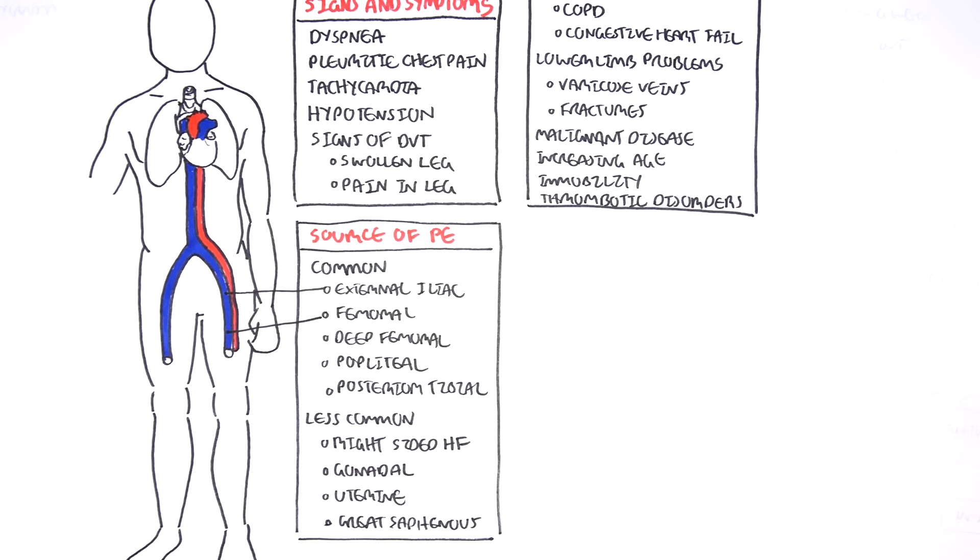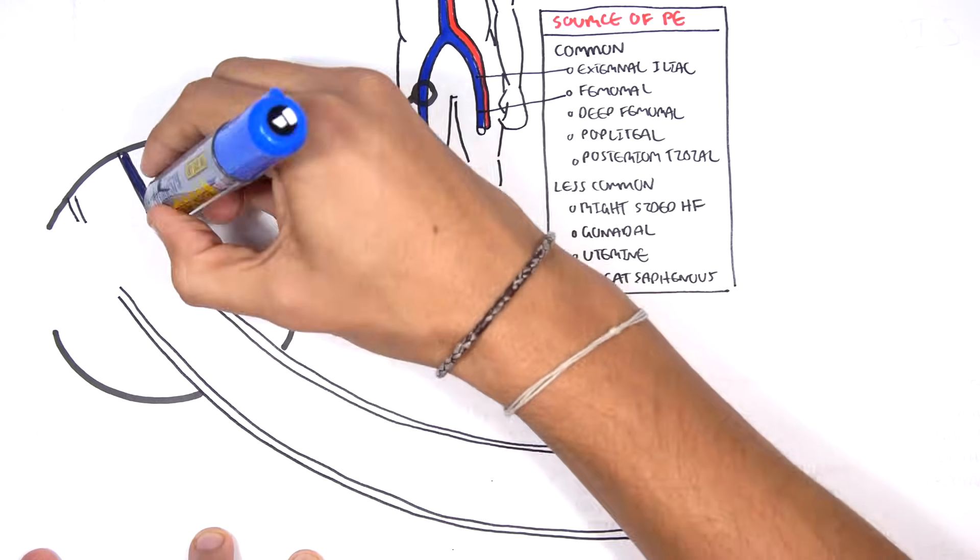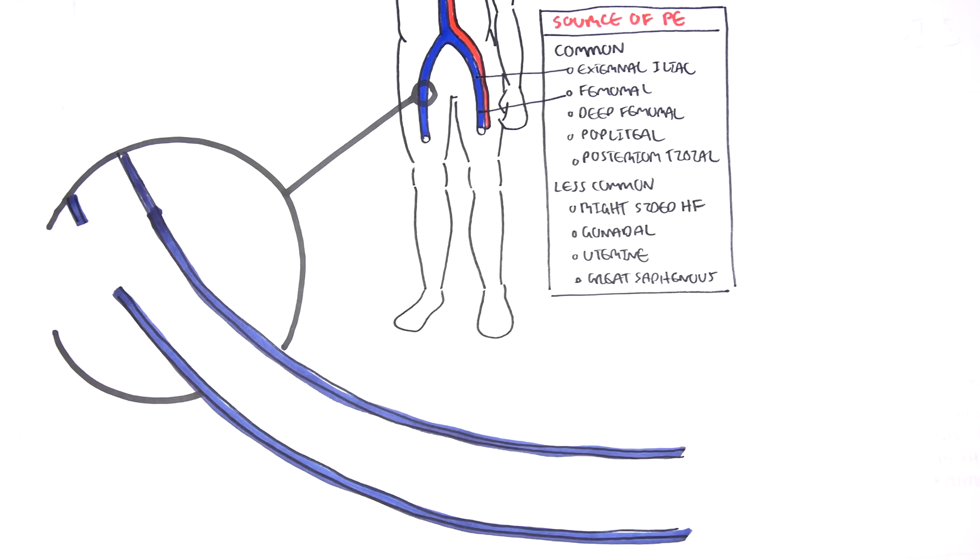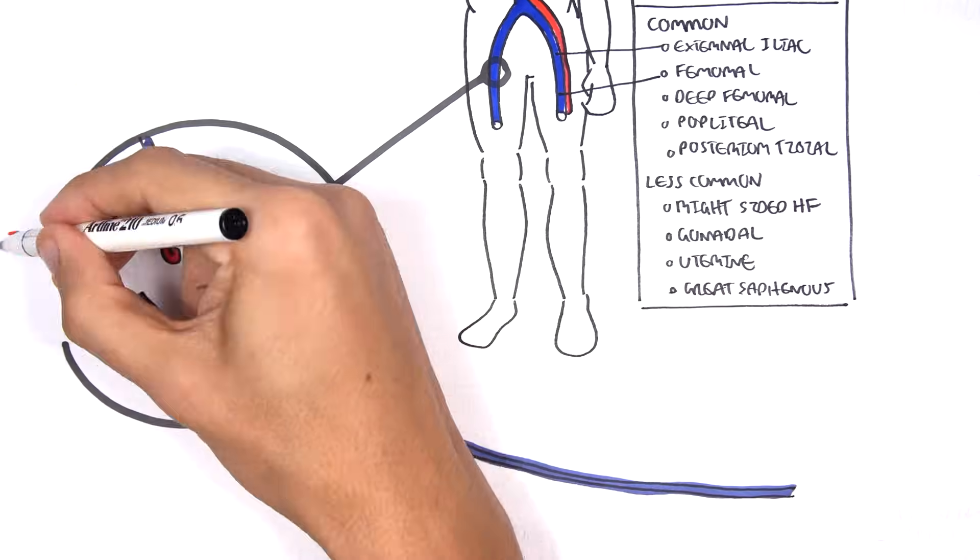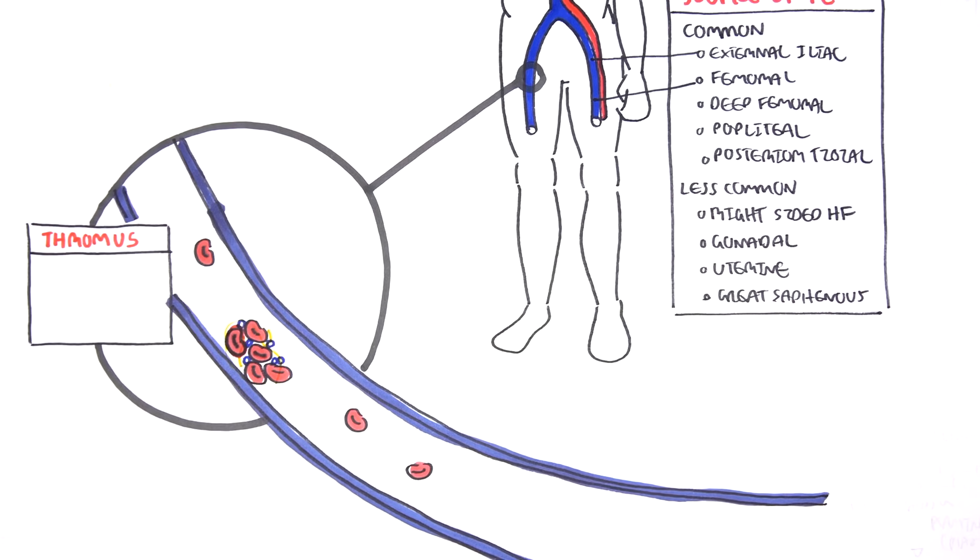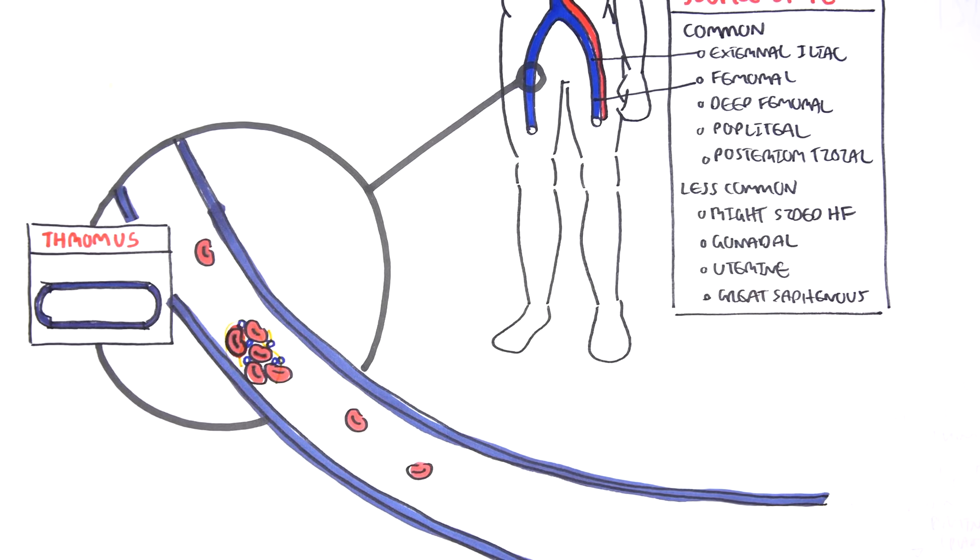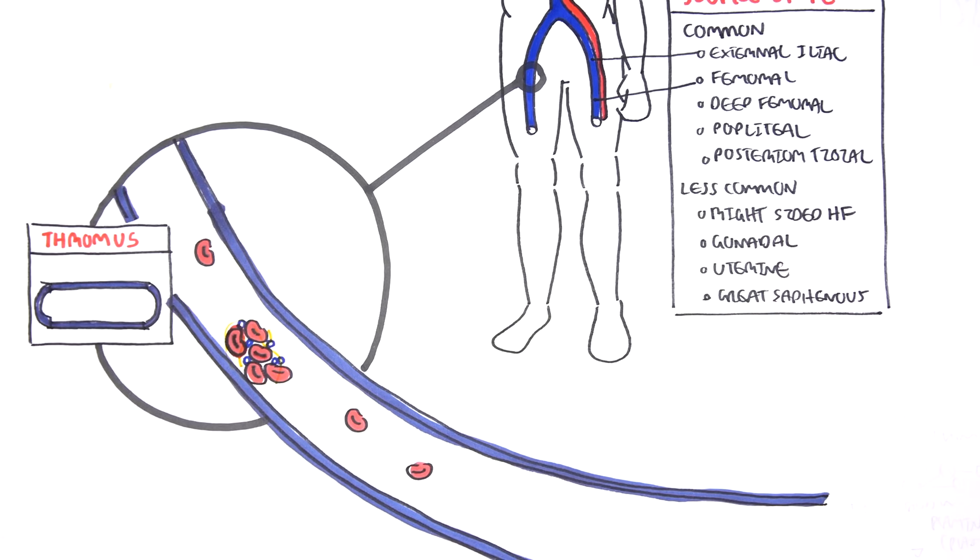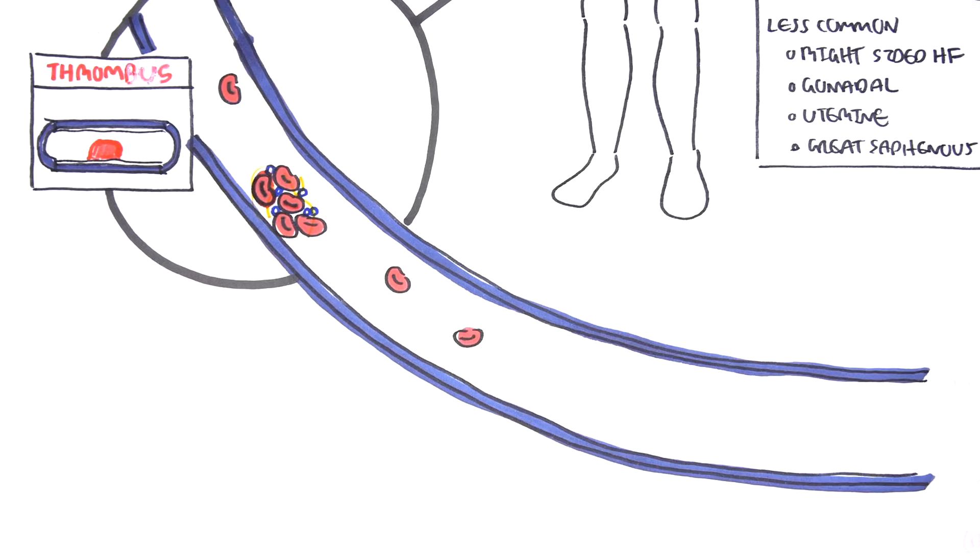So what is a thrombus? Let's zoom into the external iliac vein. Here I'm drawing the external iliac vein, and a thrombus is essentially a collection of red blood cells all clumped together with platelets and fibrin. So here we have a vein and this red thing is the thrombus.